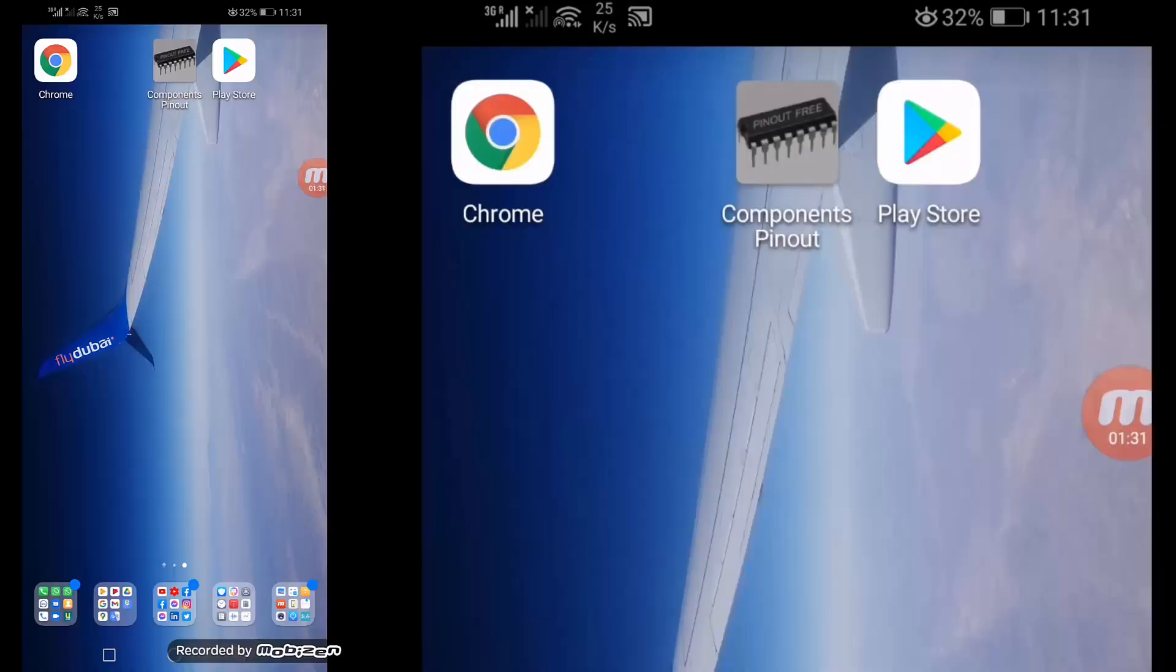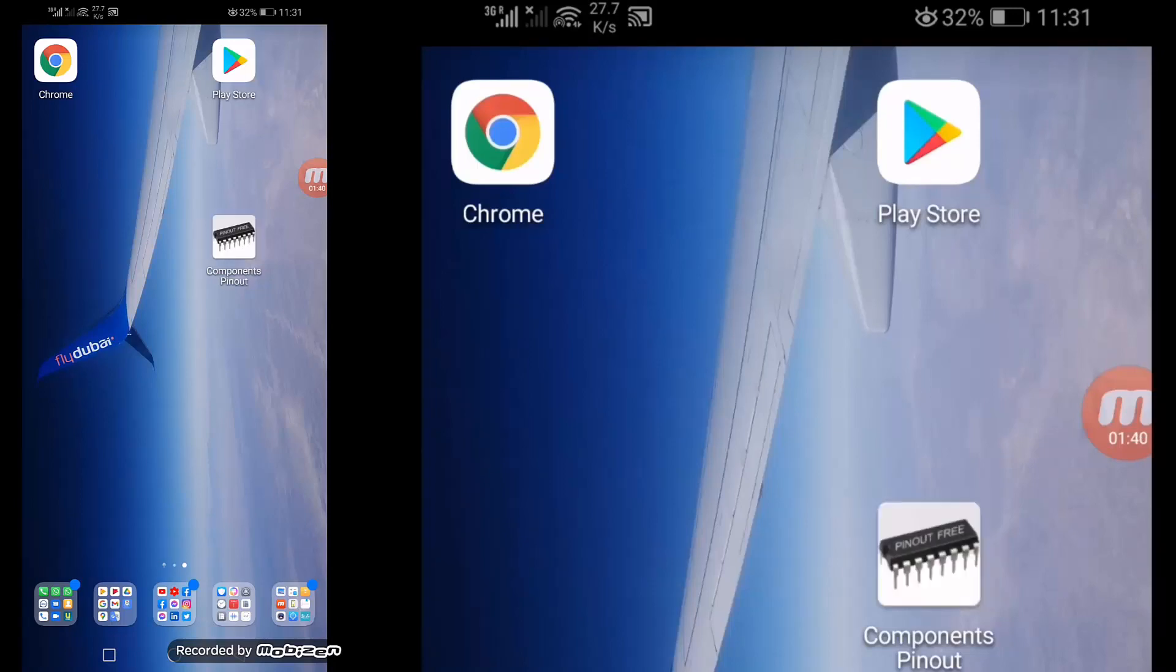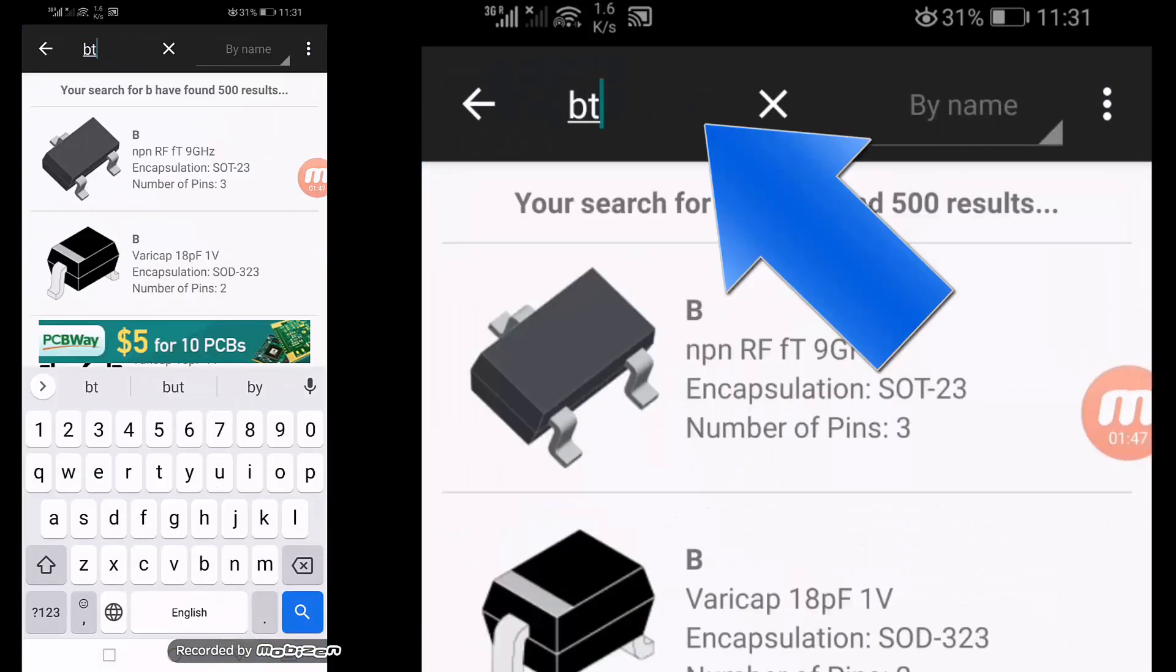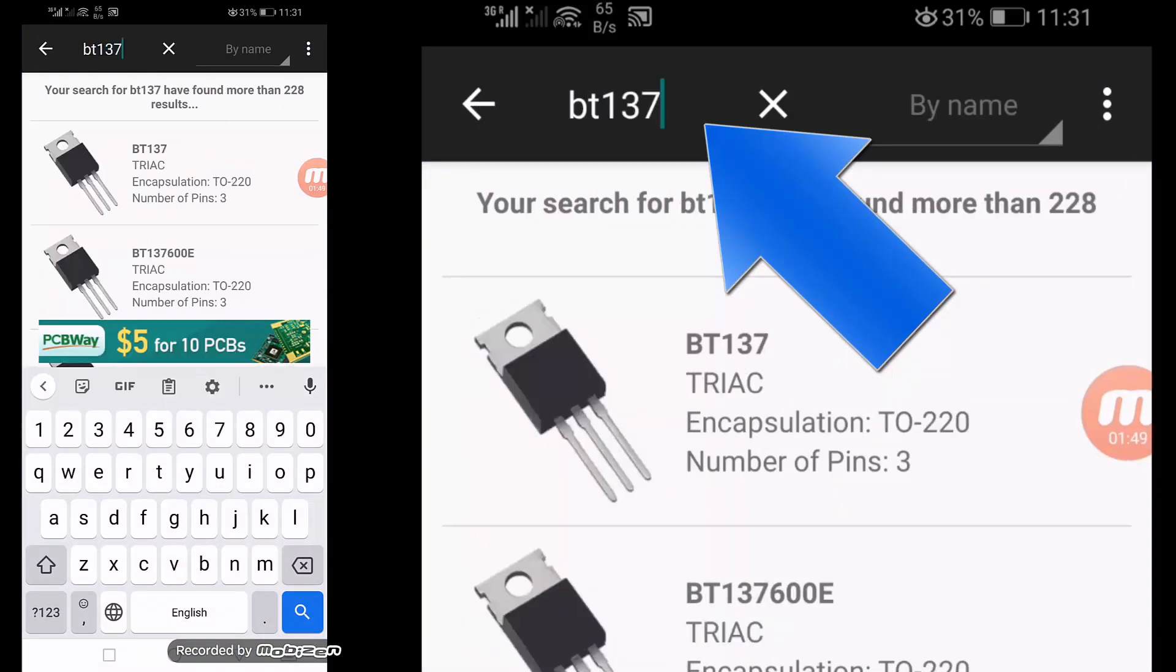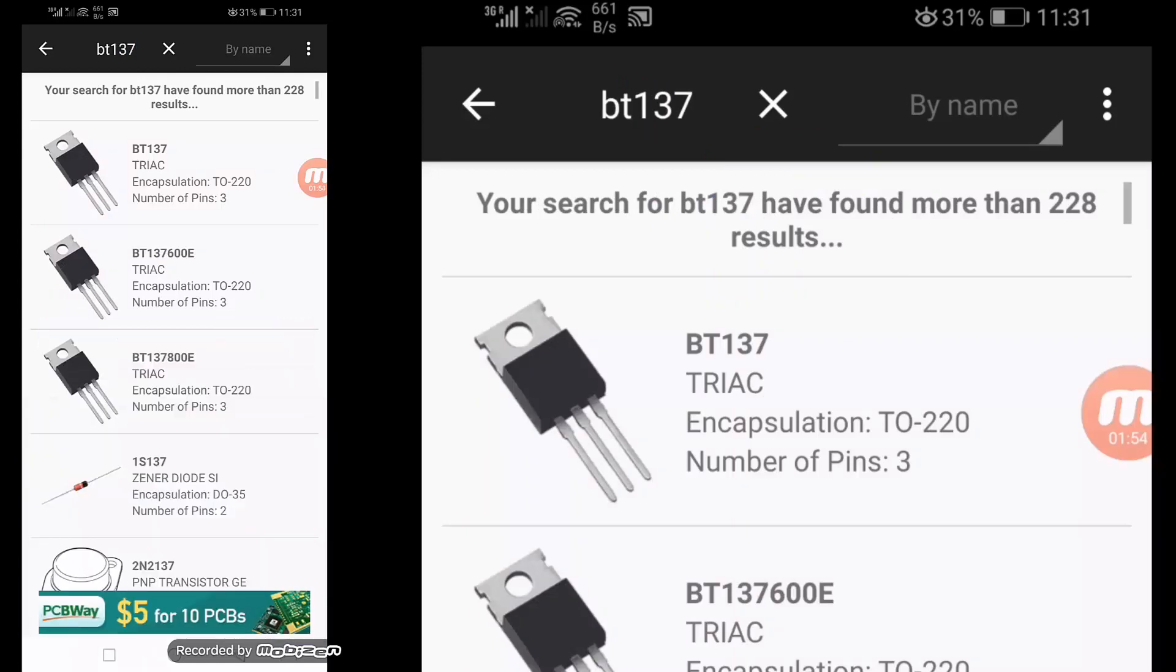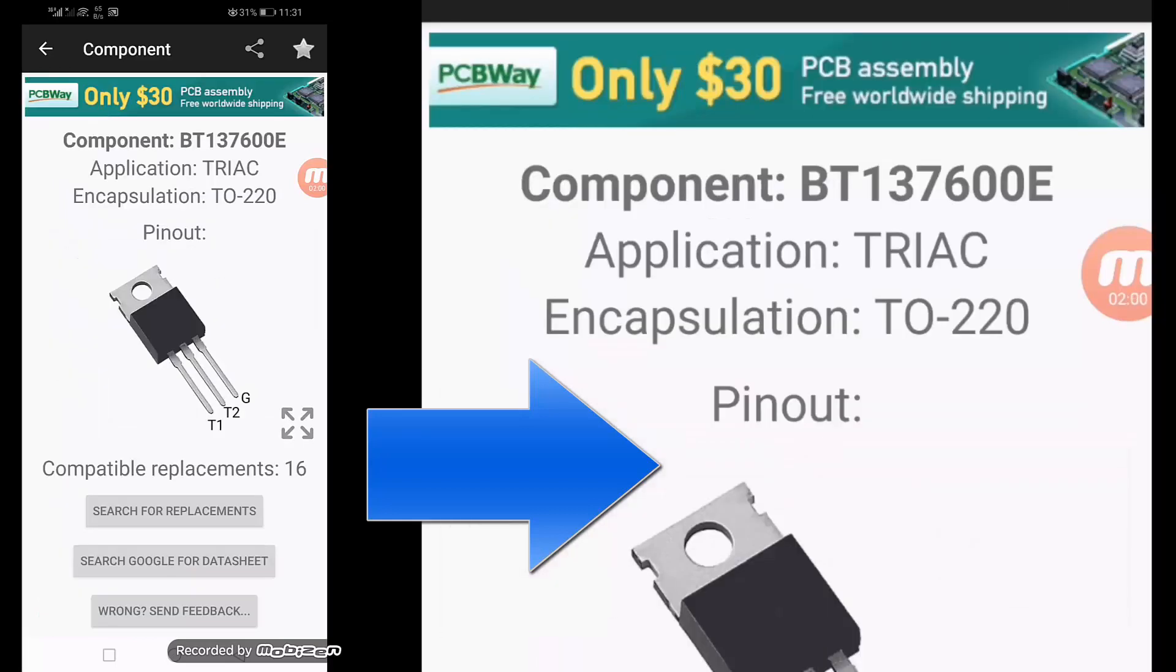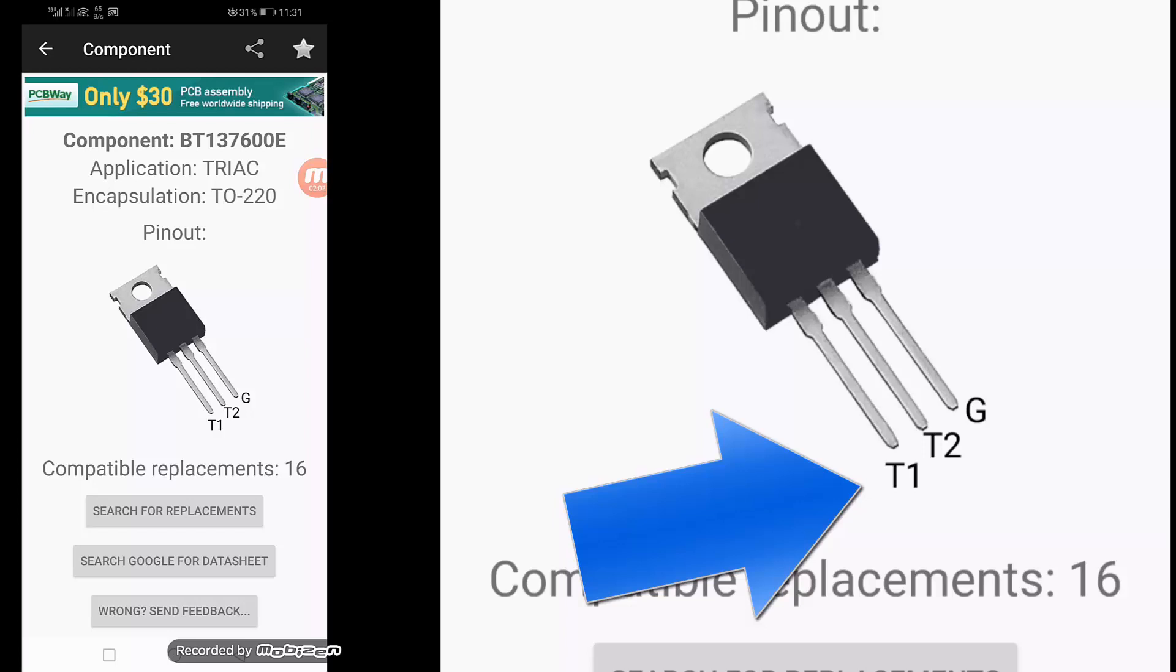I already installed it. Let's open it. Type here BT137, okay, search. It is the second number, BT137-600E. This is our required part number. It is a triac with T1, T2, G - terminal 1, terminal 2, and gate, or MT1, MT2, and gate.